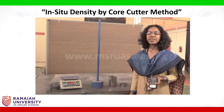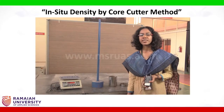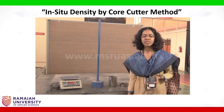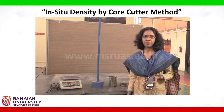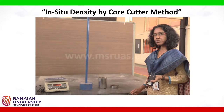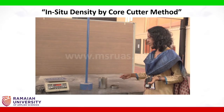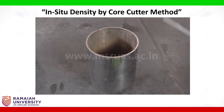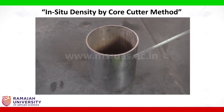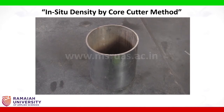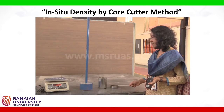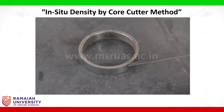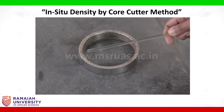Dear students, today we are going to conduct the experiment to find the in-situ density of the soil. Apparatus required includes a cylindrical mold with a diameter of 10 cm and a height of 127.4 mm, and a dolly — the steel dolly is about 2.5 cm high with an internal diameter of 10 cm.